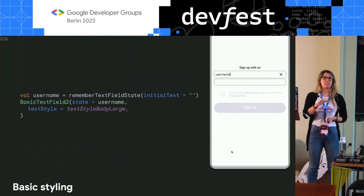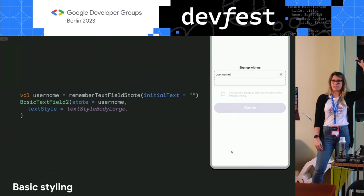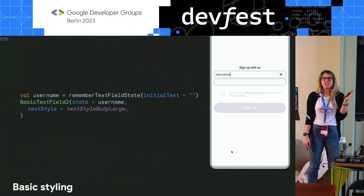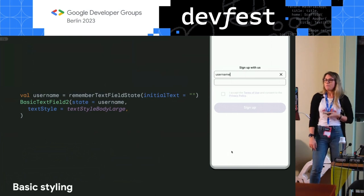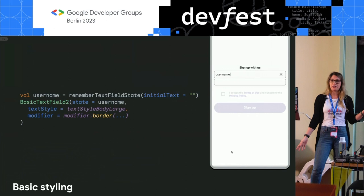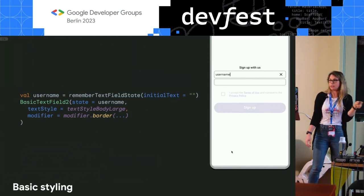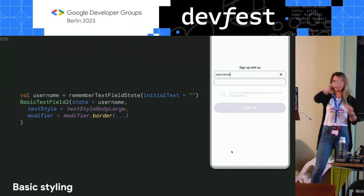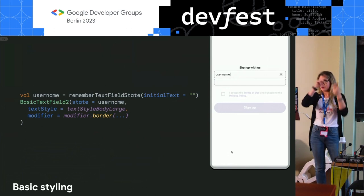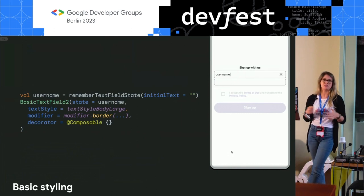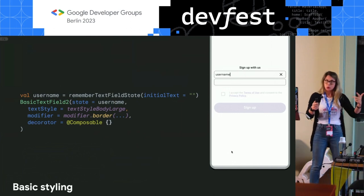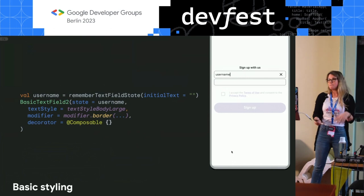On styling: basic text field 2 is not styled because it's a foundational component. But you can style it manually using the text style block for things like line spacing, font size, and font color, plus the modifier system for things like border — which is what I used to style the signup components so you can see where the text field is on screen. There's also decorator, which is a fancy rename for decoration box, giving you more control on your draw space to implement components like outline text field.